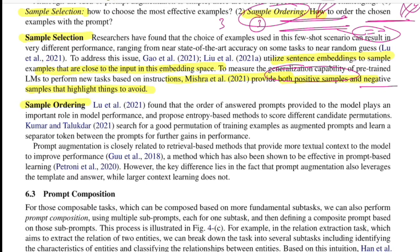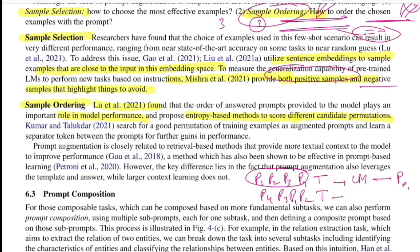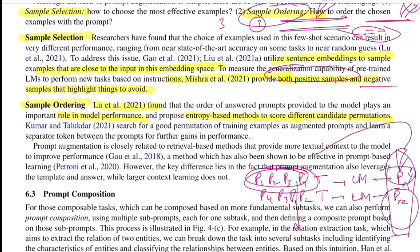For sample ordering, Lou et al. found that the order in which examples are presented significantly affects model performance. They propose an entropy-based method to score different candidate permutations. For example, with four prompts p1–p4, you try permutation p1,p2,p3,p4 and get prediction pp1, then try p4,p3,p1,p2 and get pp2, and so on. For each permutation, you compute the cross-entropy loss against the actual label y and use that score to determine the best ordering.